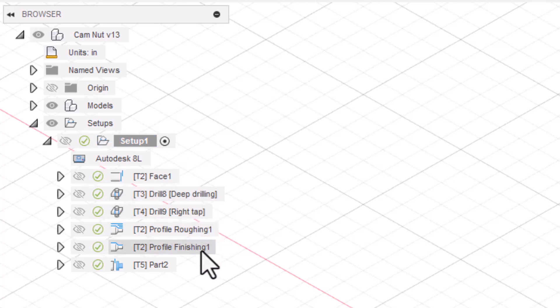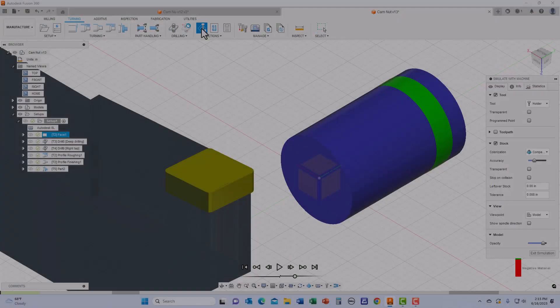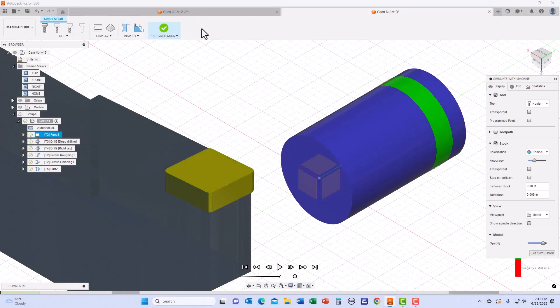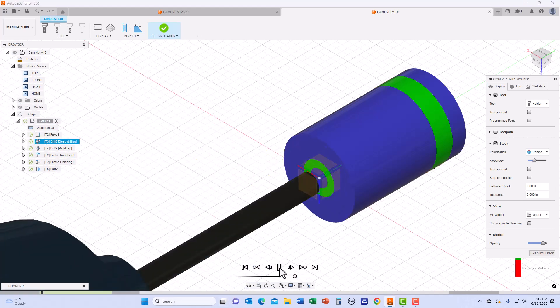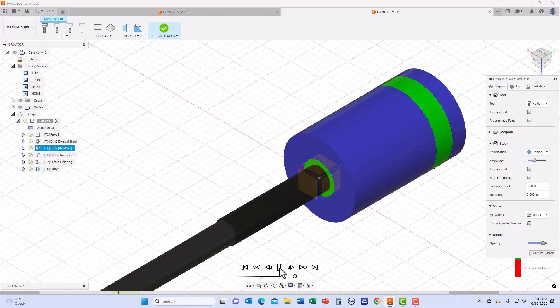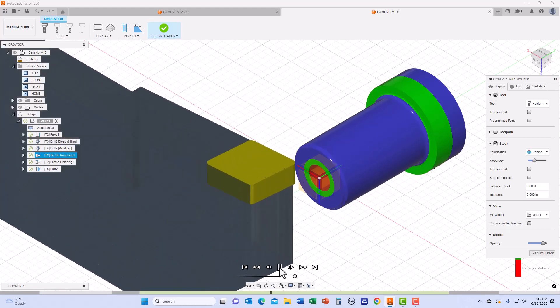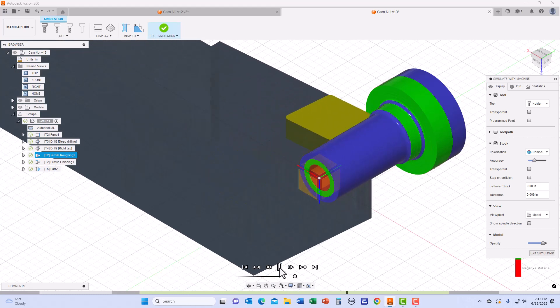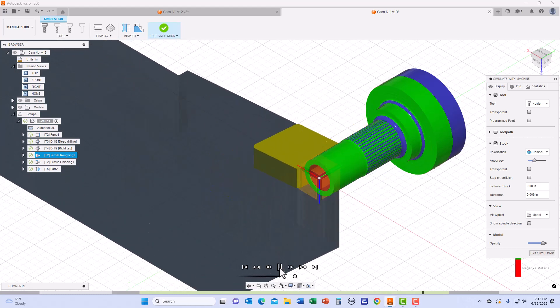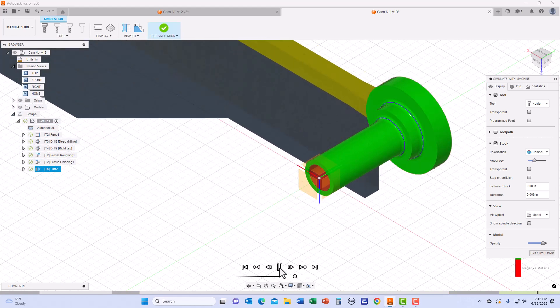I then designed the six separate tooling operations to machine the cam nut. This simulation demonstrates the overall machining operations of all the tools. I began by facing off the brass piece then drilling and tapping the center hole and doing the contour on the outer diameter of the piece, and then finish off with the cutoff tool to cut it off.